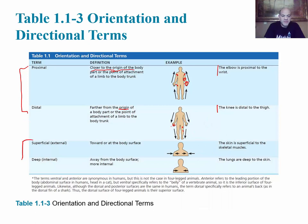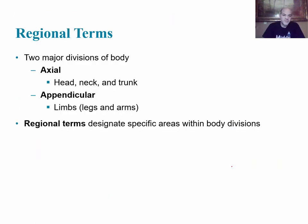Superficial means toward the surface of the body, while deep means away from the body's surface. Example of superficial: skin is superficial to skeletal muscles since the muscles are underneath. Example of deep: the lungs are deep to the skin, found deeper within the chest.